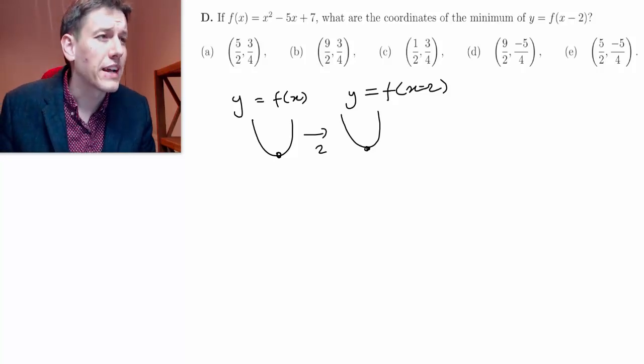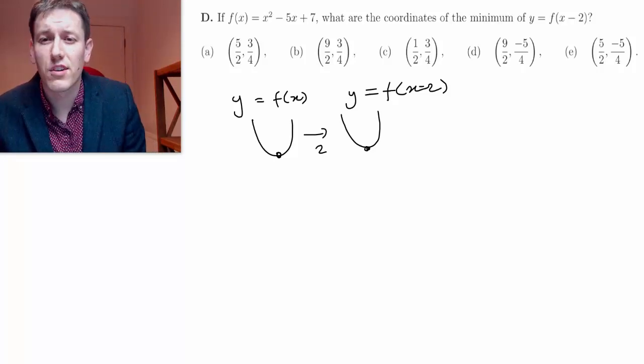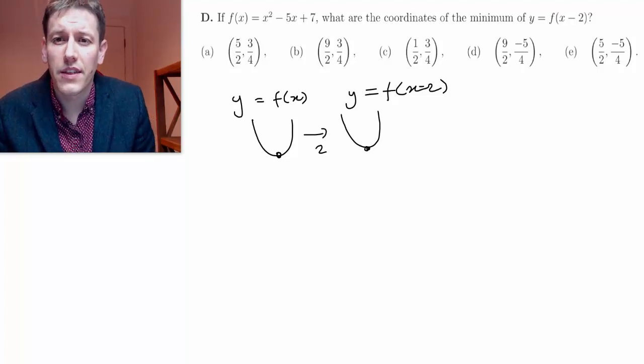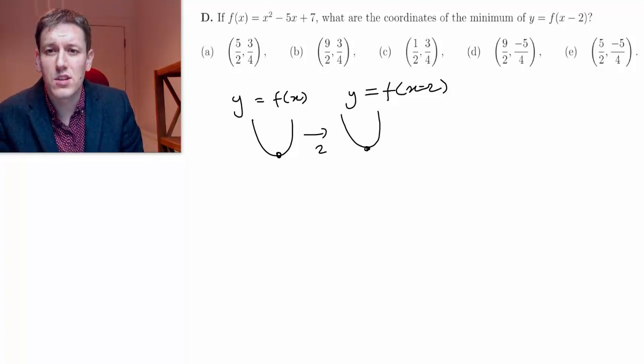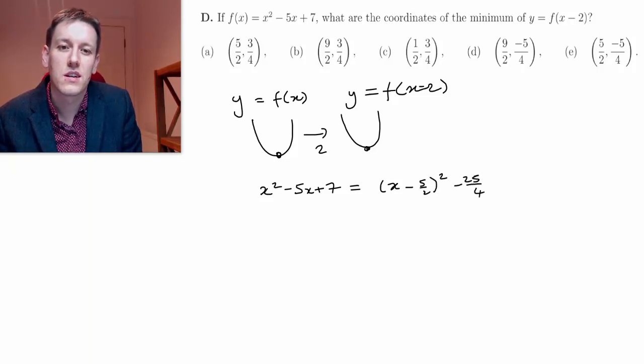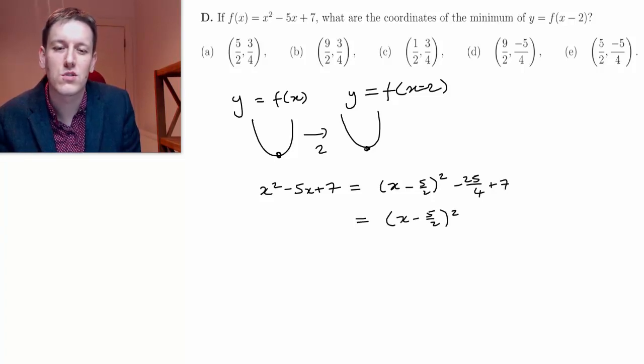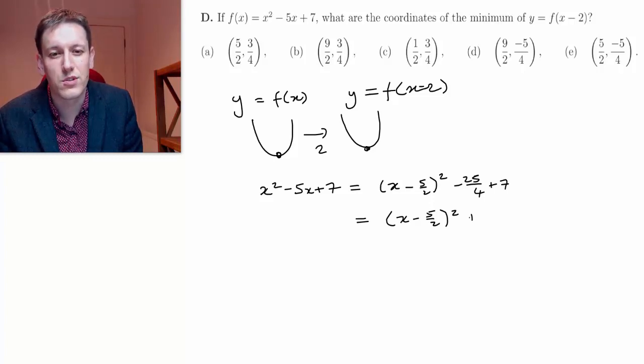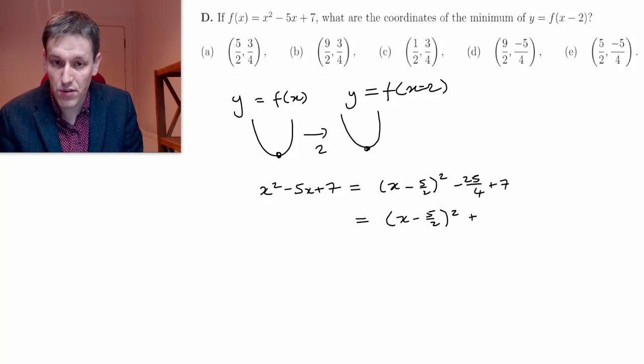Now, to work out the minimum, do whatever you prefer here, you could differentiate, or I think completing the square here is the most direct way. So x squared minus 5x plus 7 would be x minus 5 over 2 squared, then I'm going to need to subtract 5 over 2 squared and add 7, which gives me x minus 5 over 2 squared minus 25 over 4 plus 28 over 4, so that's plus 3 over 4.